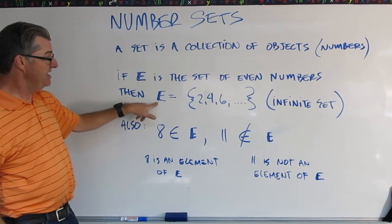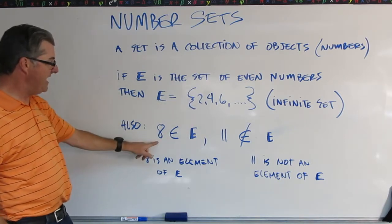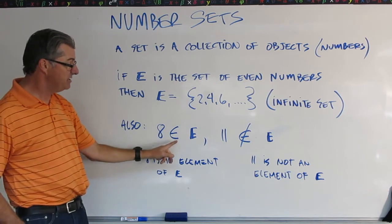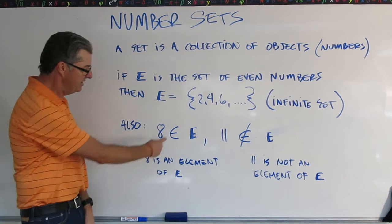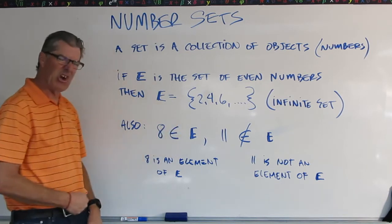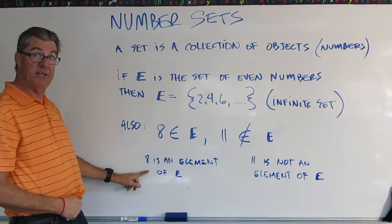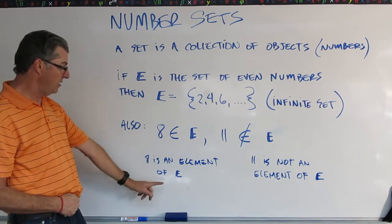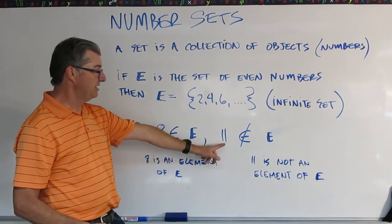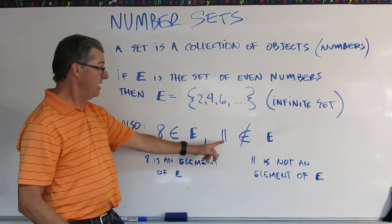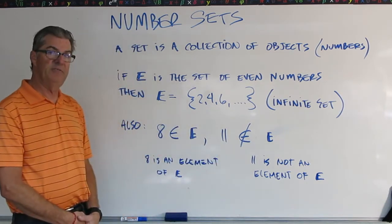Also, if E is the positive even numbers, then 8 is an element of E. So that's what this little symbol means. This is an E kind of written in a curvy way, and it means 8 is an element of set E. Now, we can also write not an element, because 11, not being even, 11 is not an element of E.